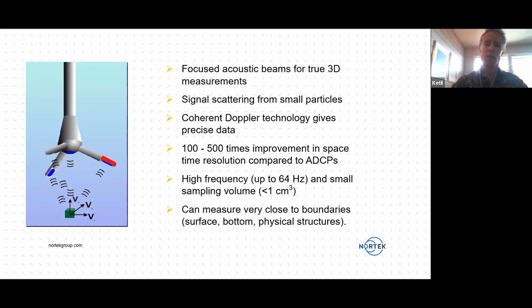The vector uses what we call a coherent Doppler technology, and I'm coming back to what that means. But in practice, it means that it gives us between 100 and 500 times improvement in space-time resolution compared to any type of ADCP. And that in turn makes it possible to measure very fast, in the case of the vector, up to 64 times per second, in a small sampling volume, which is about one cubic centimeter of size.